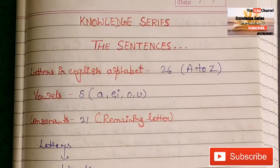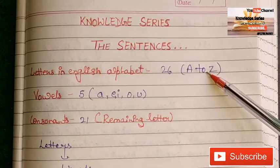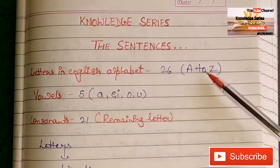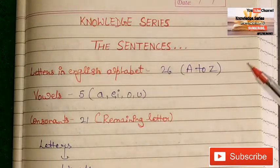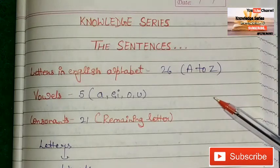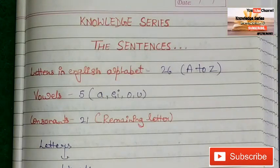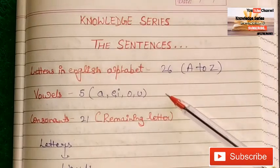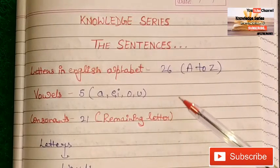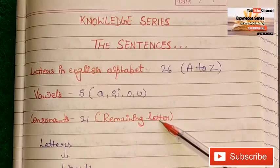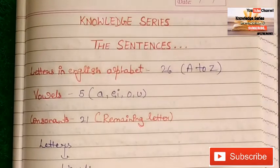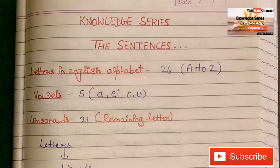Do you know how many letters are in the English alphabet? There are 26 letters from A to Z. In Hindi, letters are called 'akshar' or 'varn'. Out of 26 letters, you should also know which ones are vowels and which ones are consonants. Vowels are five: A, E, I, O, U, and the remaining 21 letters are consonants.